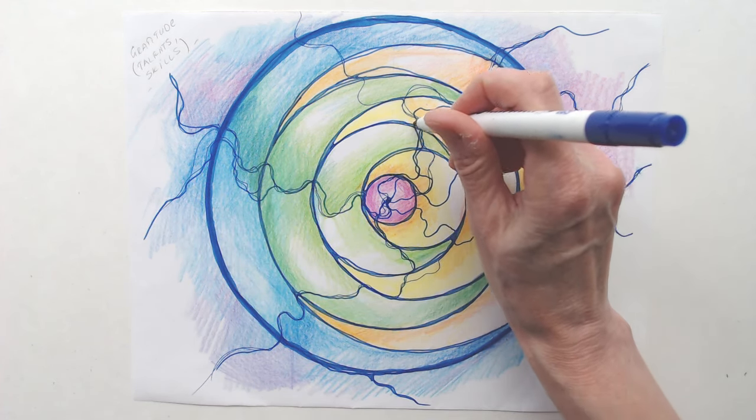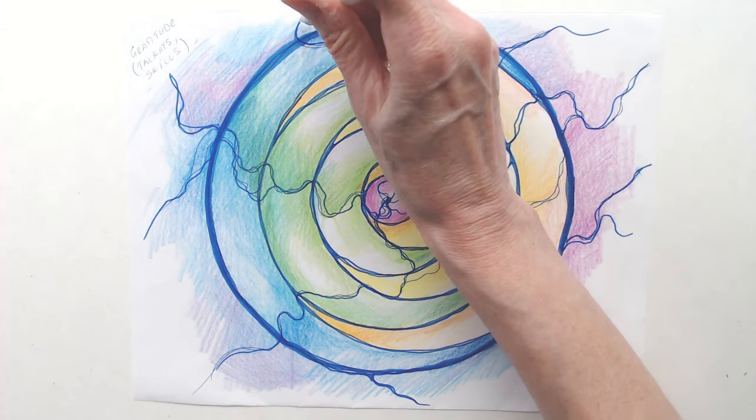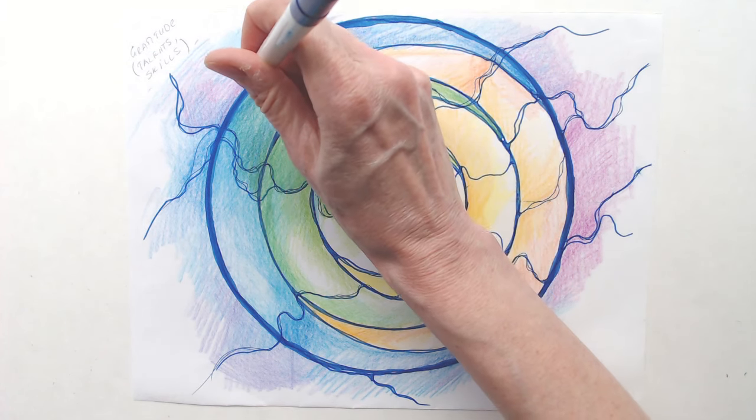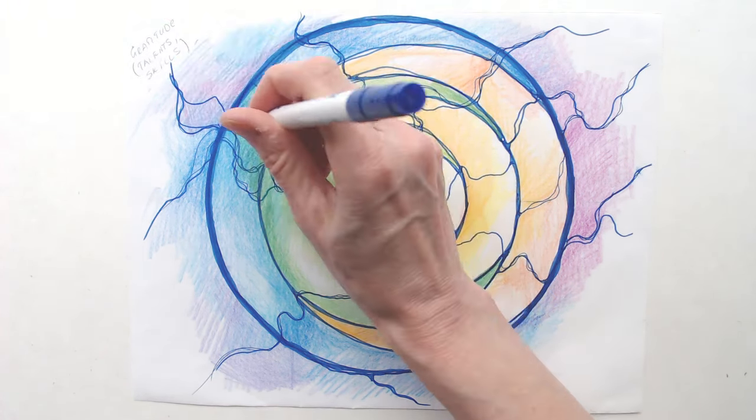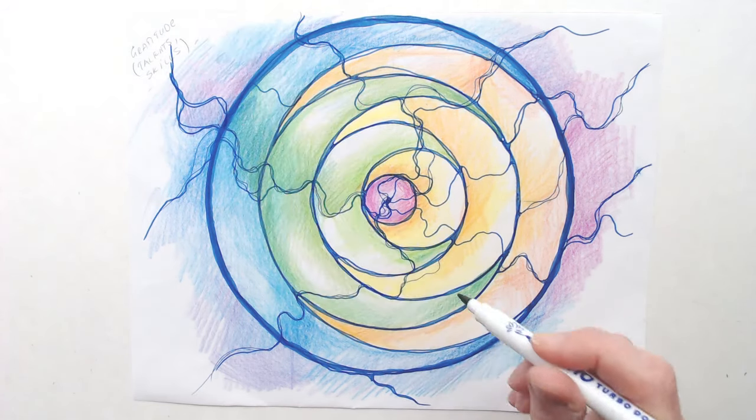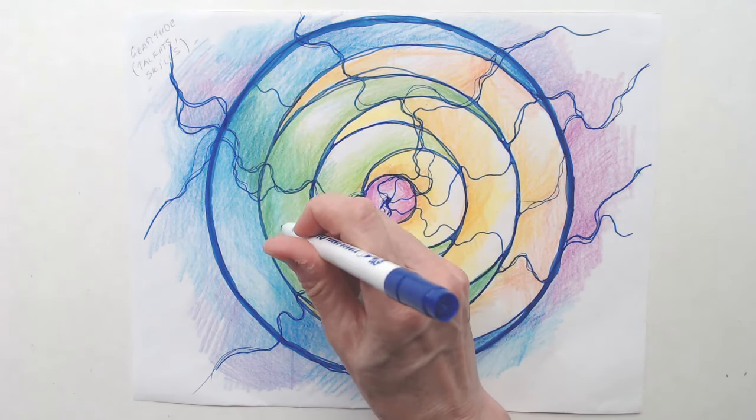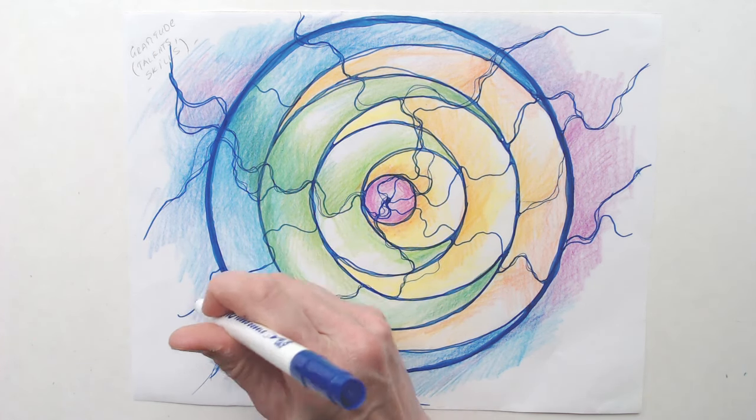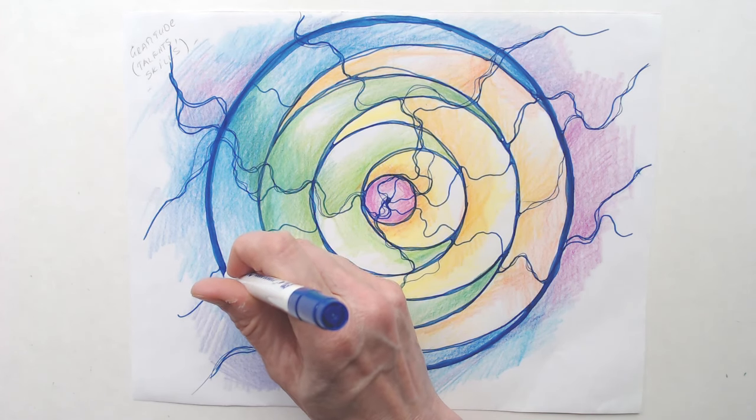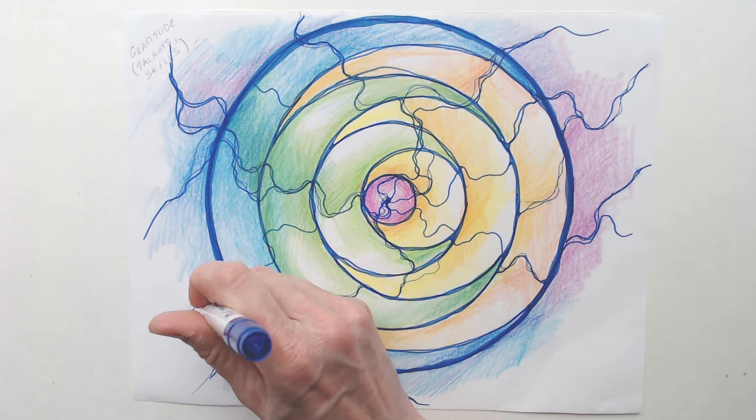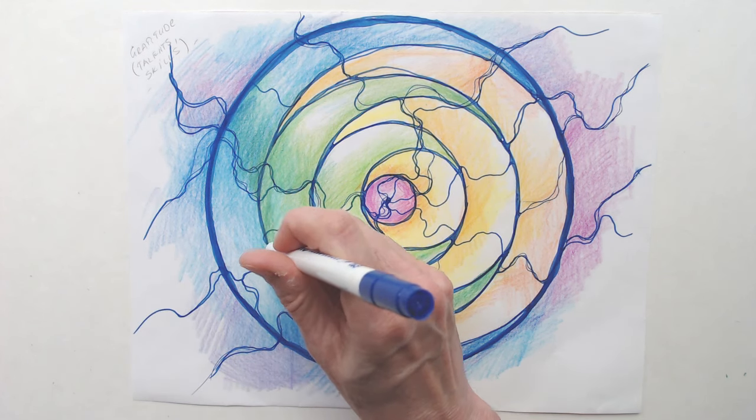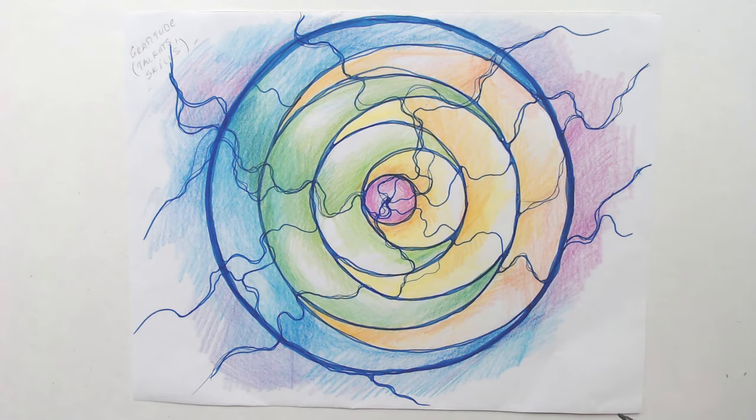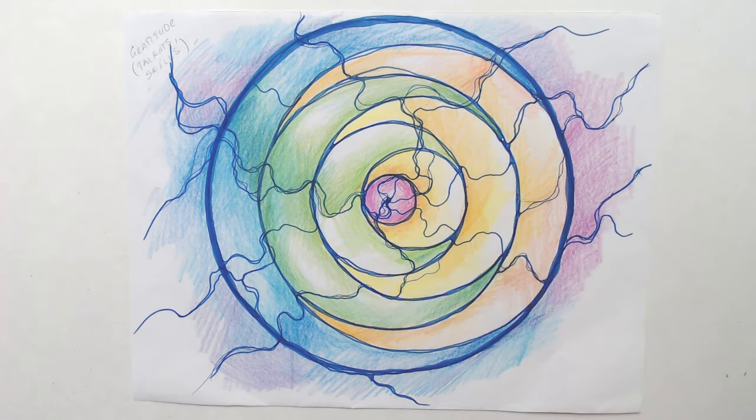Silver is linked to intuition, reflection, and feminine energy. It helps us access our inner wisdom and connects with higher guidance. Silver enhances my intuition and aligns me with divine wisdom. As you color, let this affirmation deepen your connection to the creative process and enhance your sense of unity and connection with the universe.